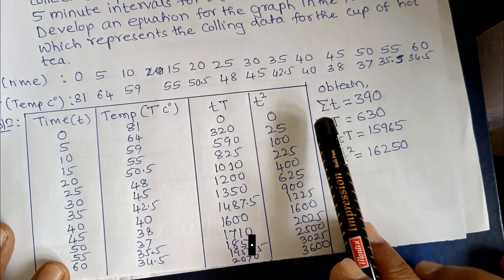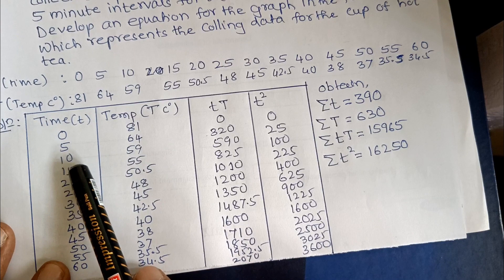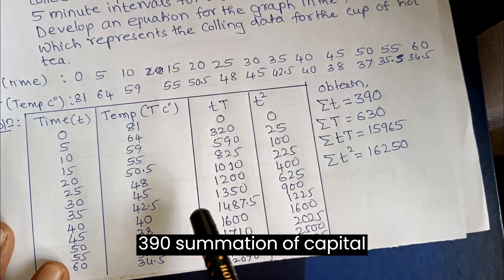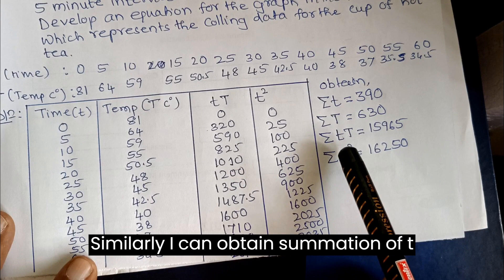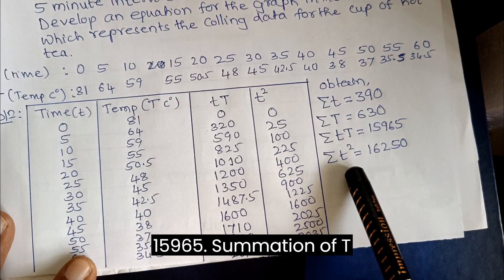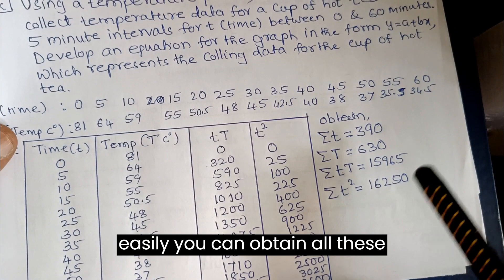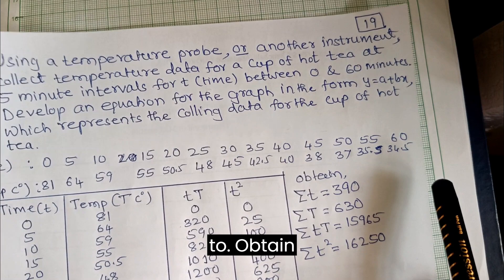Now I will calculate summation of small t time, which gives 390. Summation of capital T, the second column, you will get 630. Similarly, summation of small t into capital T gives 15965. Summation of T square equals 16250. Very easily you can obtain all these values.